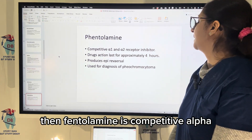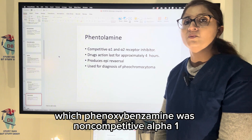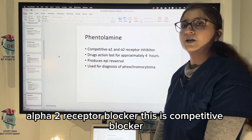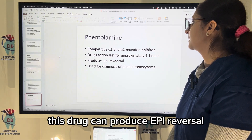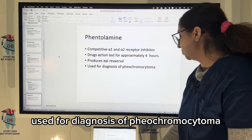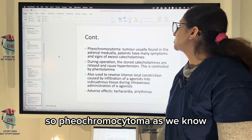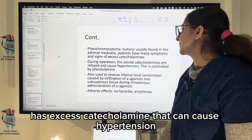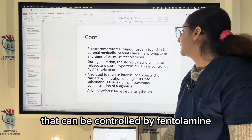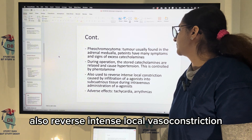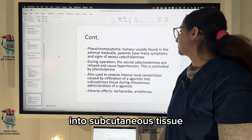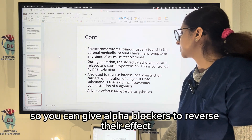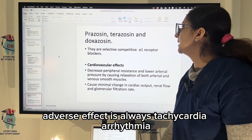Phentolamine is a competitive alpha blocker for both alpha-1 and alpha-2, whereas phenoxybenzamine was a non-competitive blocker. Phentolamine can produce epinephrine reversal and is used for diagnosis of pheochromocytoma — a tumor of the adrenal medulla where excess catecholamines cause hypertension, controlled by phentolamine. It also reverses intense local vasoconstriction caused by infiltration of alpha agonists into subcutaneous tissue. Adverse effect: tachycardia and arrhythmia.